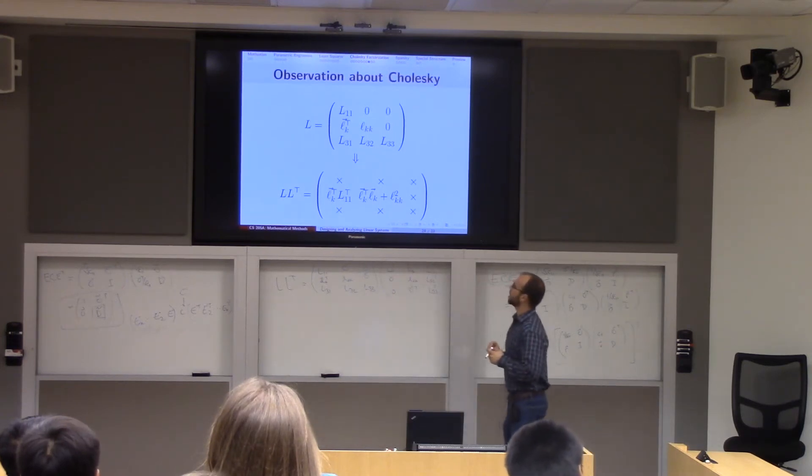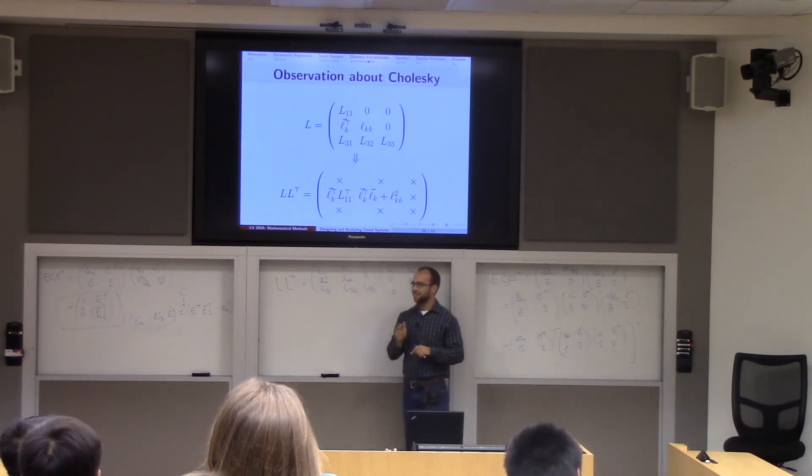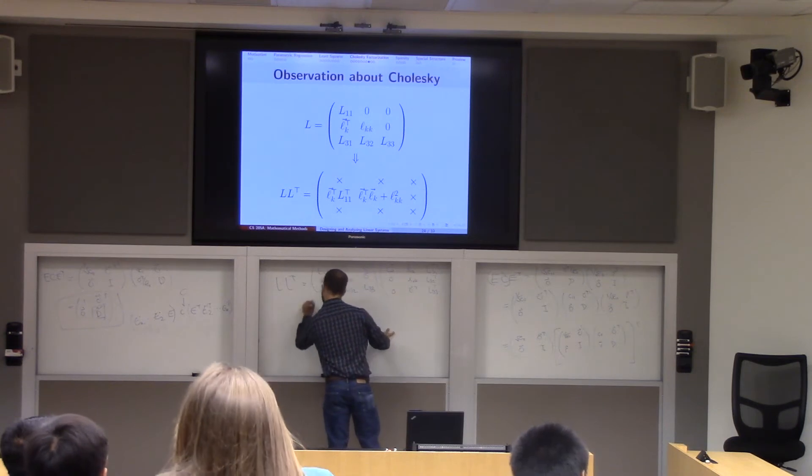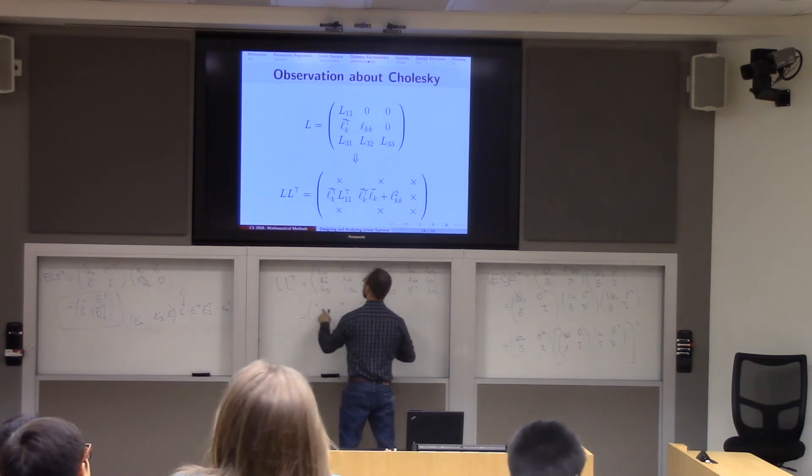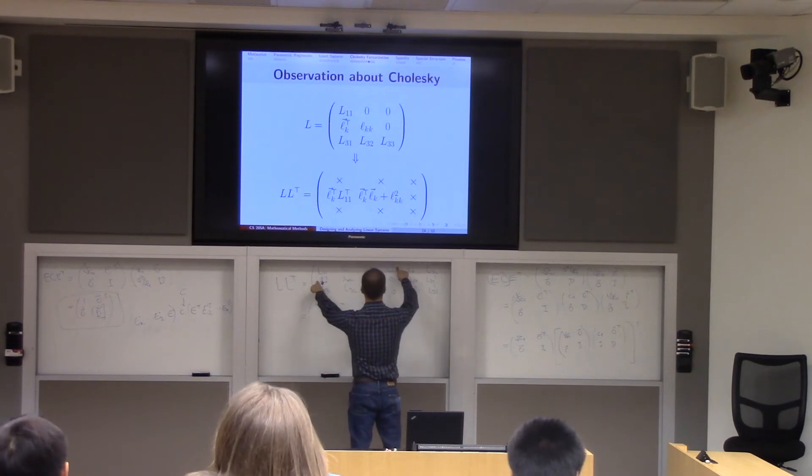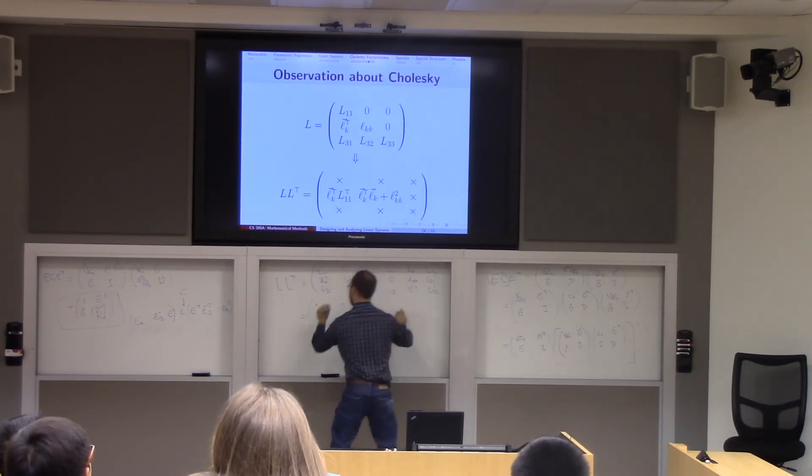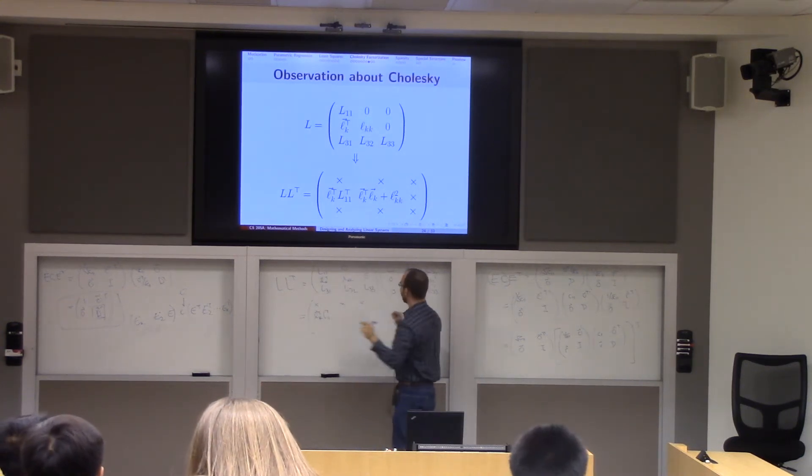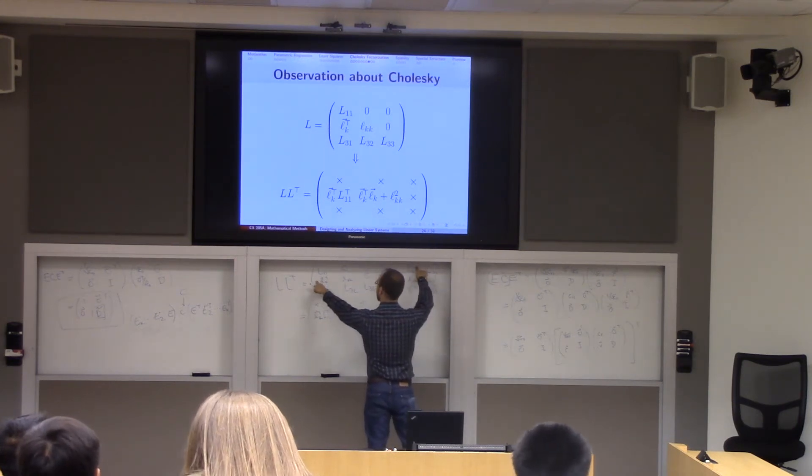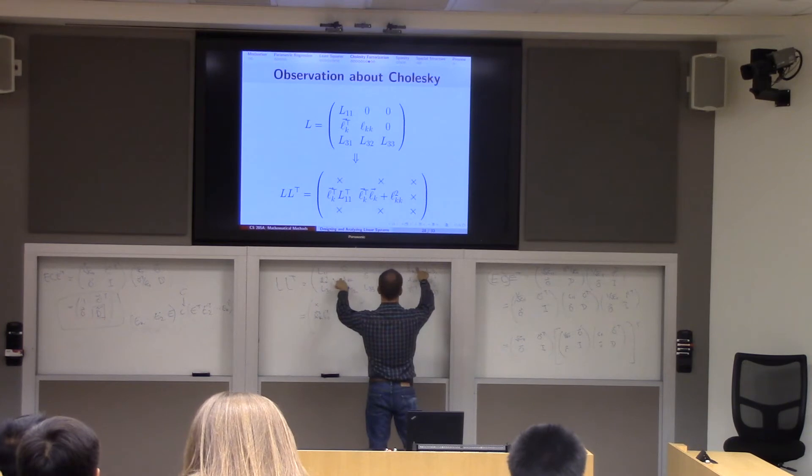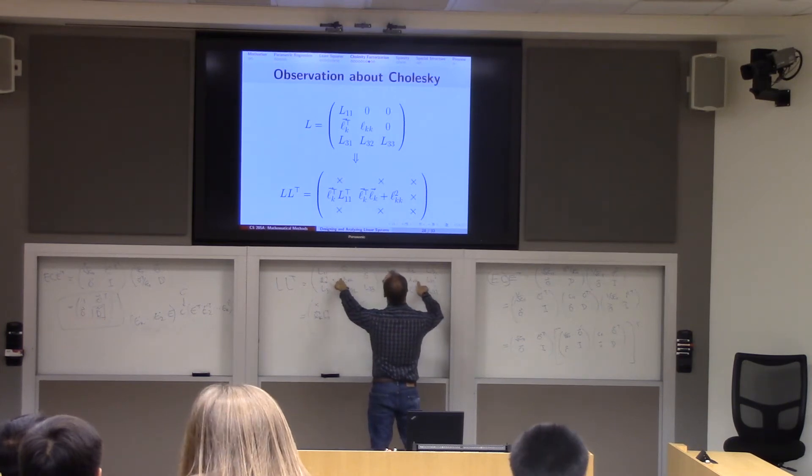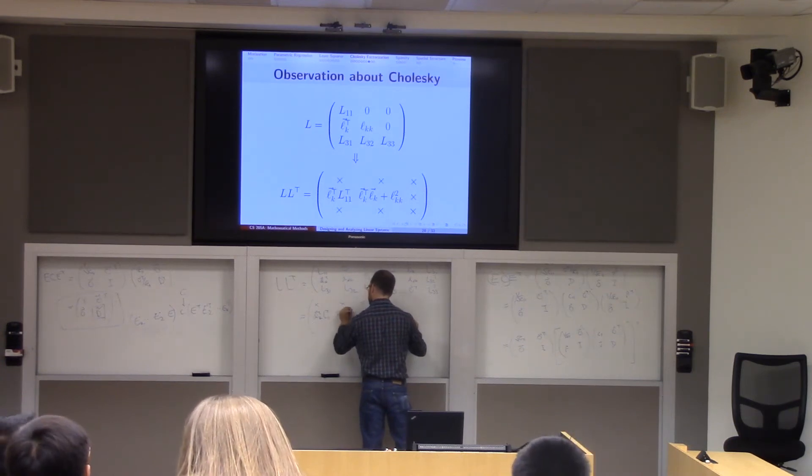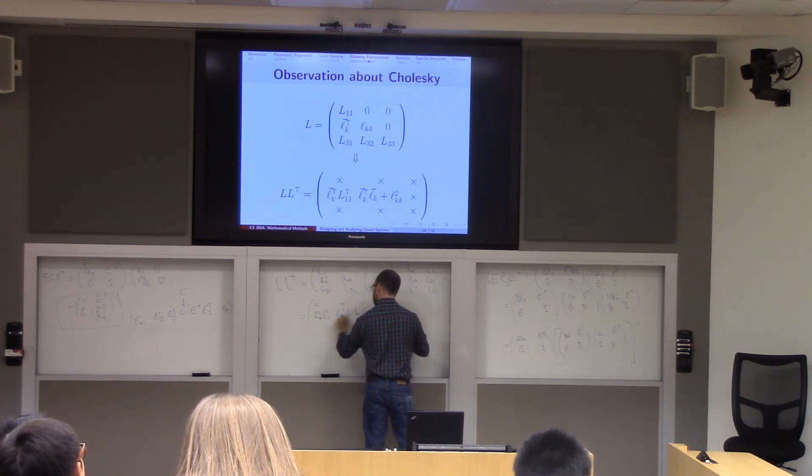Okay, but thankfully for us, we actually only care about two elements of this product, which I've conveniently written for you here. I can try and multiply them, and hopefully I won't botch it quite as much as I just did. So we're just going to ignore the first row of this matrix. In the second row, you get LK transpose times L11 transpose. Yes! In the second one, we're going to get LK dot LK, right? LK plus LKK squared. And then the rest of our matrix we don't care about.